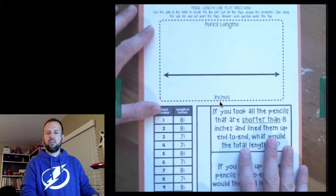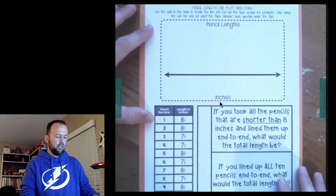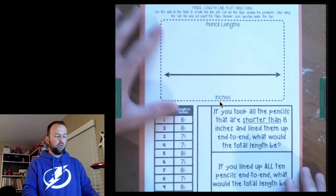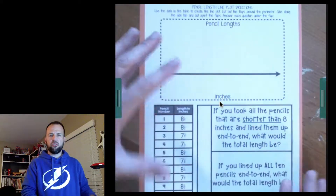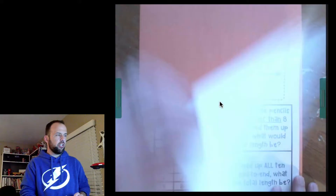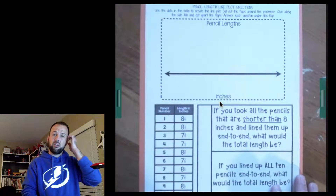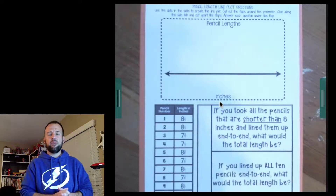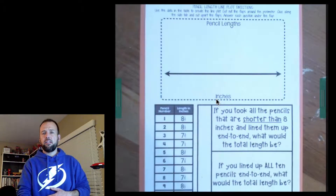All you're really going to need for today is something to write on and something to write with. You're going to need the pencil length activity sheet — it's available in your module, you can print it out. And if you want, I'm going to cut mine out and glue it down to some construction paper, just to make it look cool. That's not necessarily required, but make sure you have those things gathered up and you're ready to go.